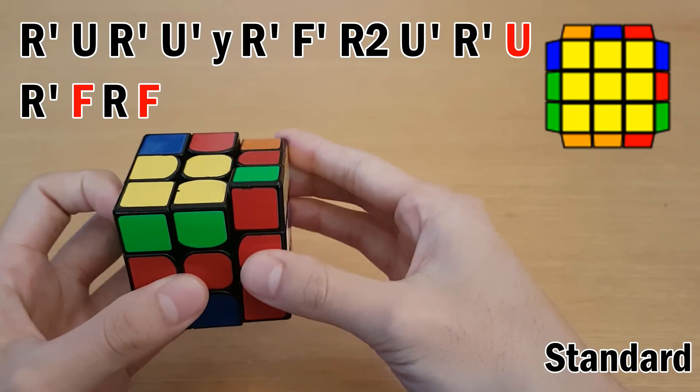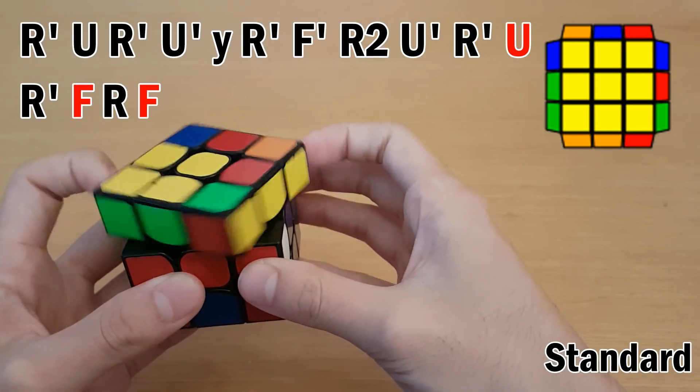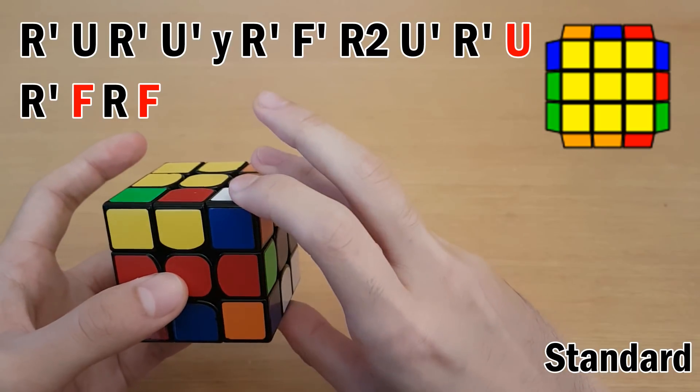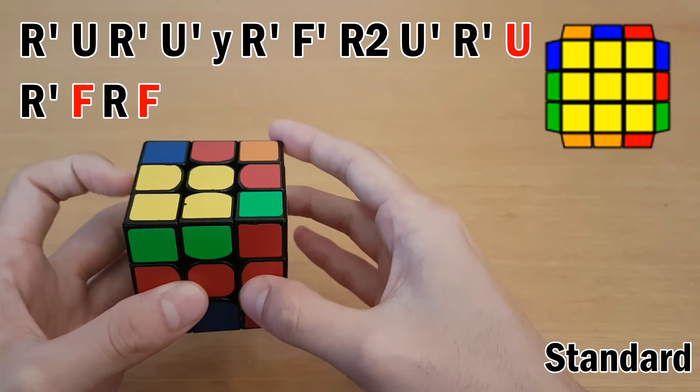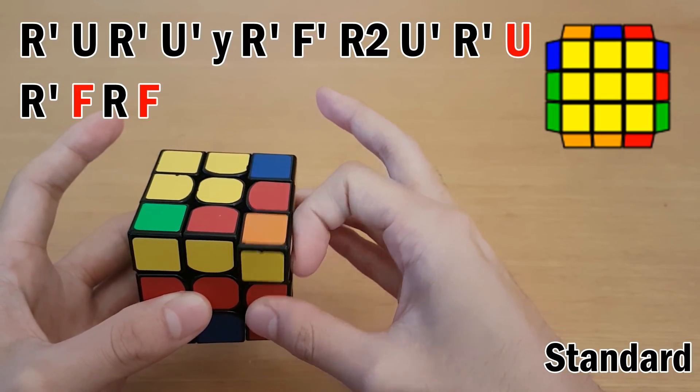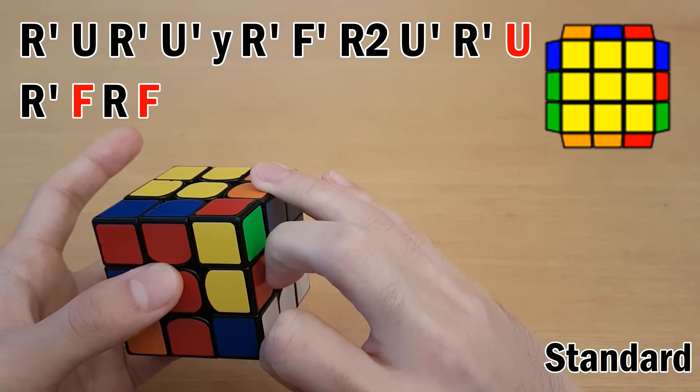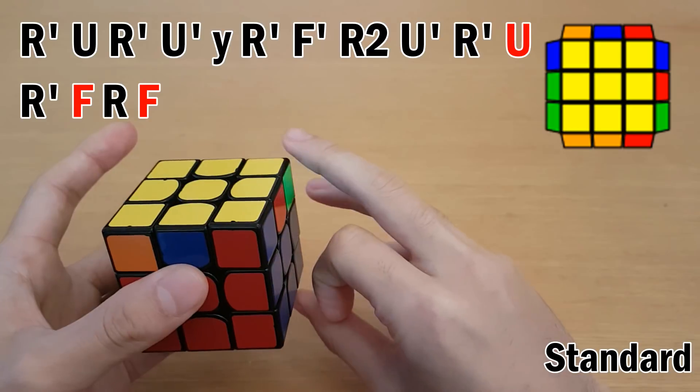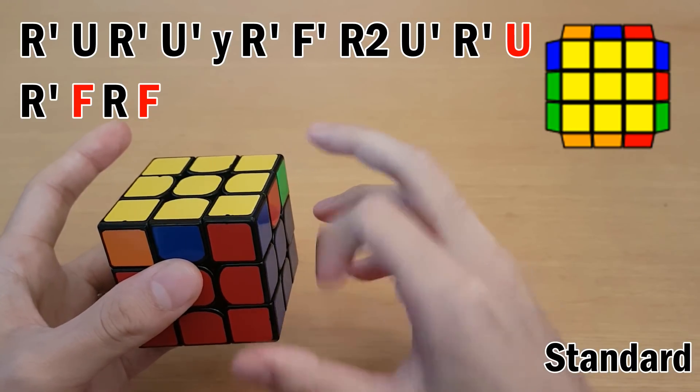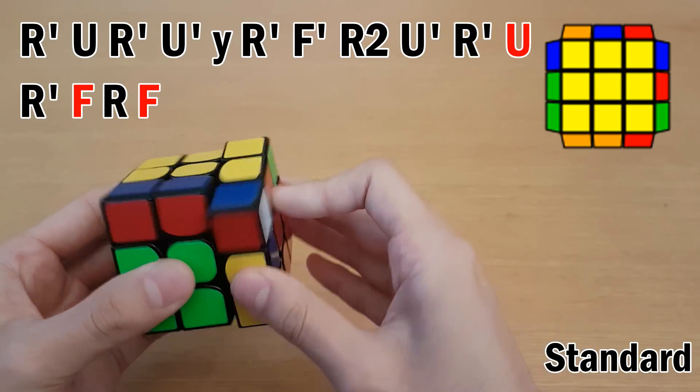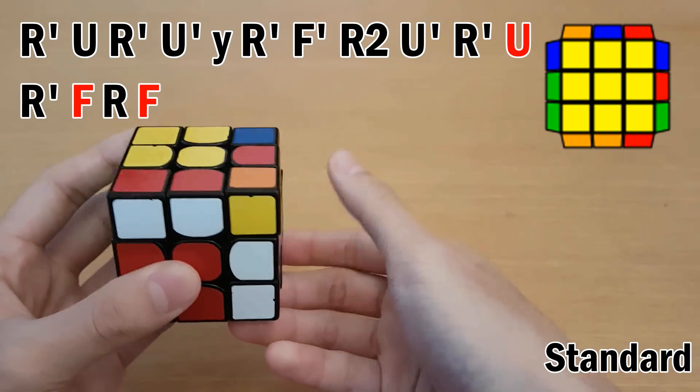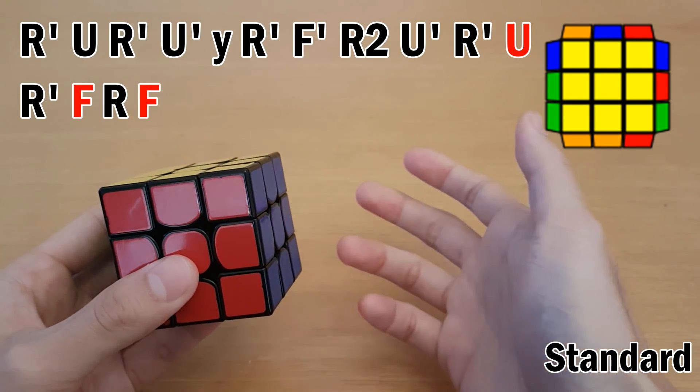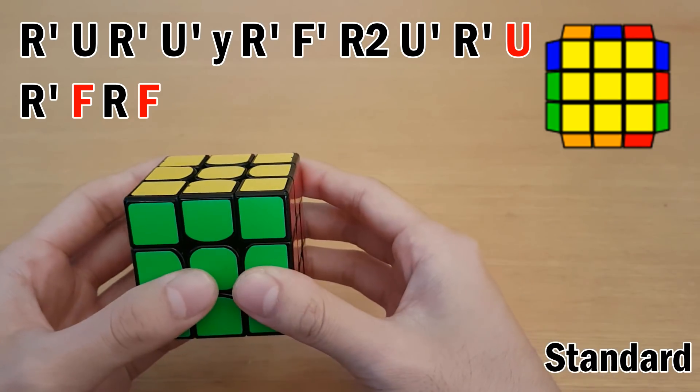So here when you get to the first U move, here, then when you do this with your index finger, you don't want to use your index finger again for the F because you'll have to reset. So instead, you can do U here with your index finger, then F here with your middle finger. Then afterwards you can reset and do F with your index finger. So again, that would look like this. And it doesn't make a big difference when I'm going that slow, but let's see a little bit faster.